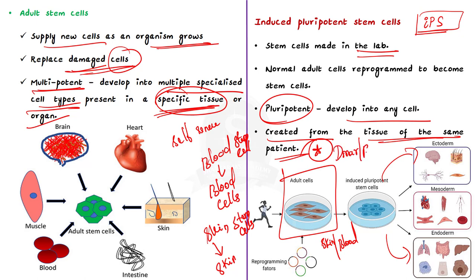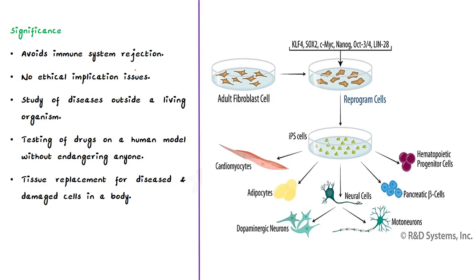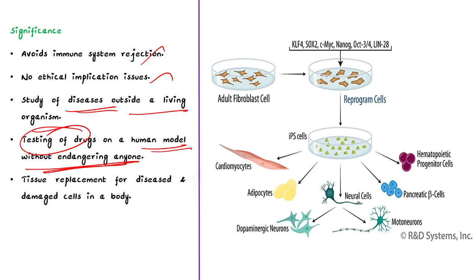Talking about the significance of induced pluripotent stem cells: firstly, these cells can be created from the tissue of the same patient who is going to receive the tissue or organ transplantation, helping avoid immune system rejection. We can also avoid possible ethical implication issues, because these cells are harvested only from a willing adult without harming them. Additionally, these patient-specific cells can be used to study disease outside a living organism, to test drugs on a human model without endangering anyone, and hopefully to act as tissue replacement for diseased and damaged cells in the body.